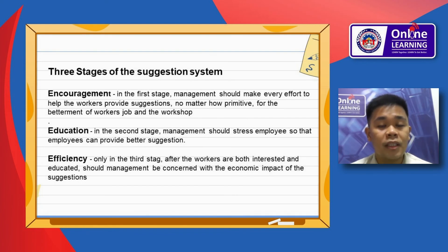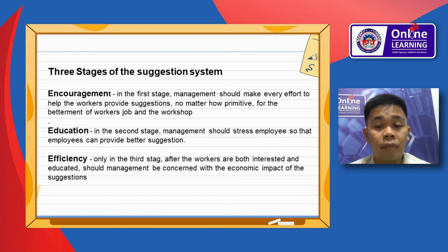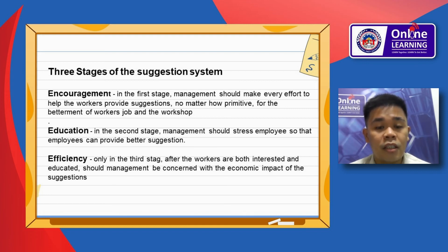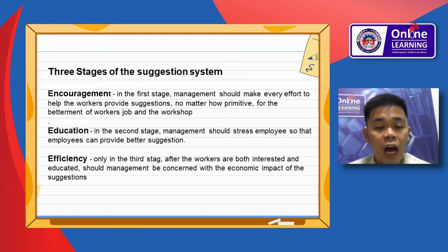There are three stages of a suggestion system. The first stage is Encouragement: management should make every effort to help workers provide suggestions, no matter how primitive, for the betterment of the worker's job at the workshop. The second stage is Education: management should train employees so they can provide better suggestions. The third stage is Efficiency: only after workers are both interested and educated should management consider the economic impact of a suggestion.